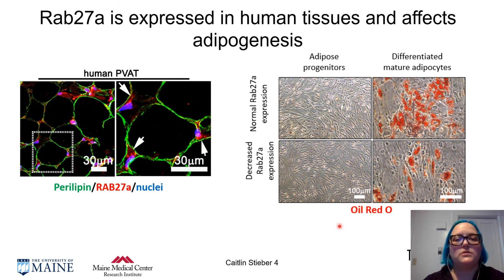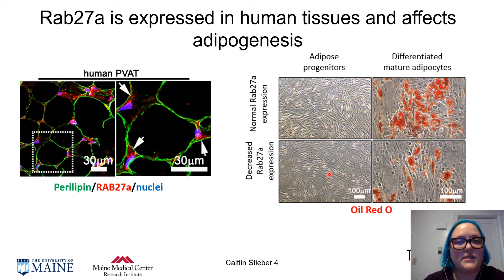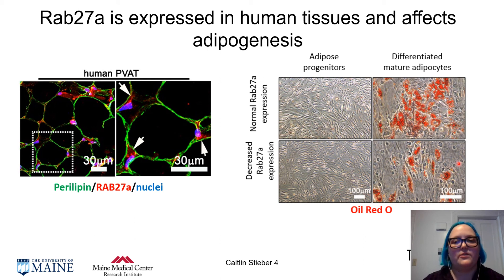Additionally, we are able to demonstrate some of the role of RAB27A in adipogenesis. We look at adipose progenitors before they are adipocytes, and then after they're differentiated into mature adipocytes. We found that when you decrease RAB27A expression in adipose progenitors, or pre-adipocytes, once you differentiate them into mature adipocytes, there's less lipid as indicated by oil red O staining. This means that RAB27A is controlling adipogenesis. The future of my project is to understand exactly the mechanism of how RAB27A controls adipogenesis and how this changes in different cardiovascular diseases.